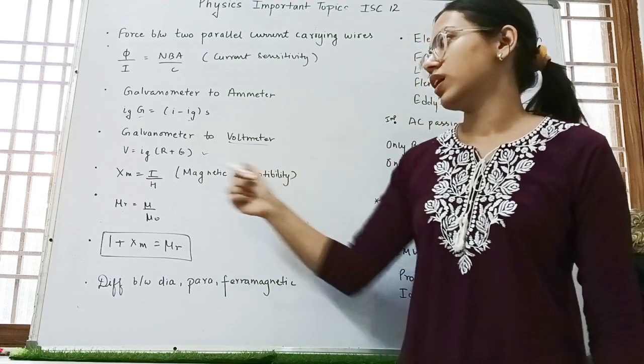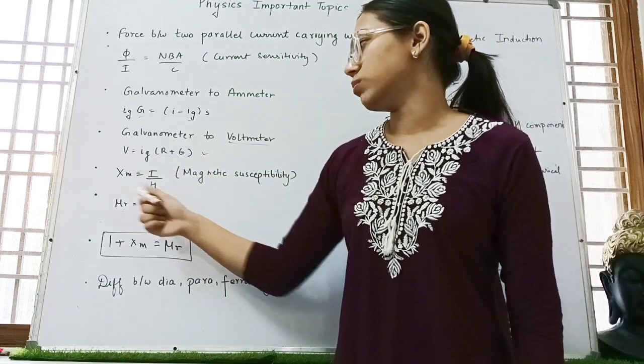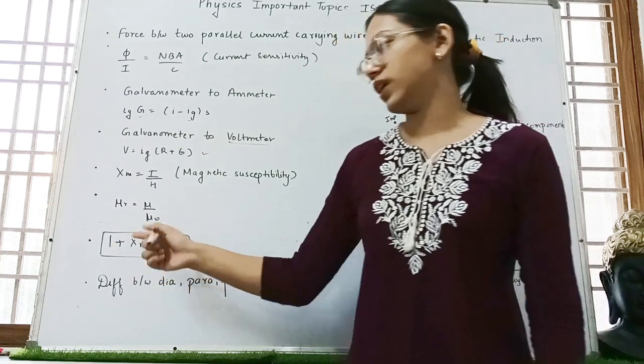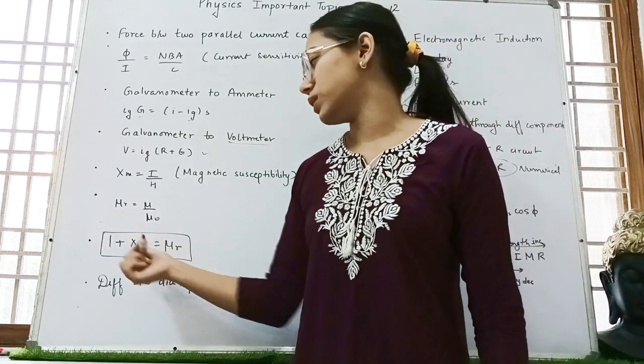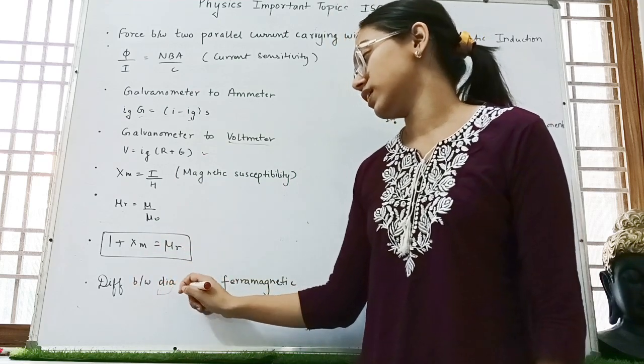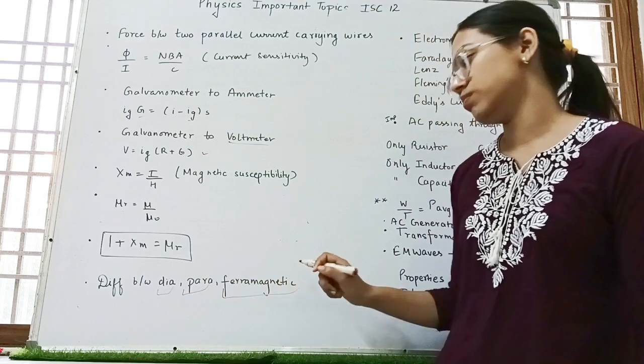Then magnetic susceptibility. Xm equals to I by H. Then mu r equals to mu by mu naught. Then you will have to write 1 plus Xm equals to mu r.